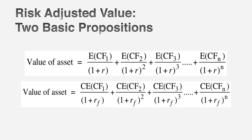Having laid that as a basis, let's extend it. The value of an asset is the present value of the expected cash flows discounted back at a risk adjusted discount rate. Or the value of an asset is the certainty equivalent cash flow discounted back at a risk free rate, because you've adjusted the cash flows for risk. Two very basic propositions flow directly from looking at that equation.